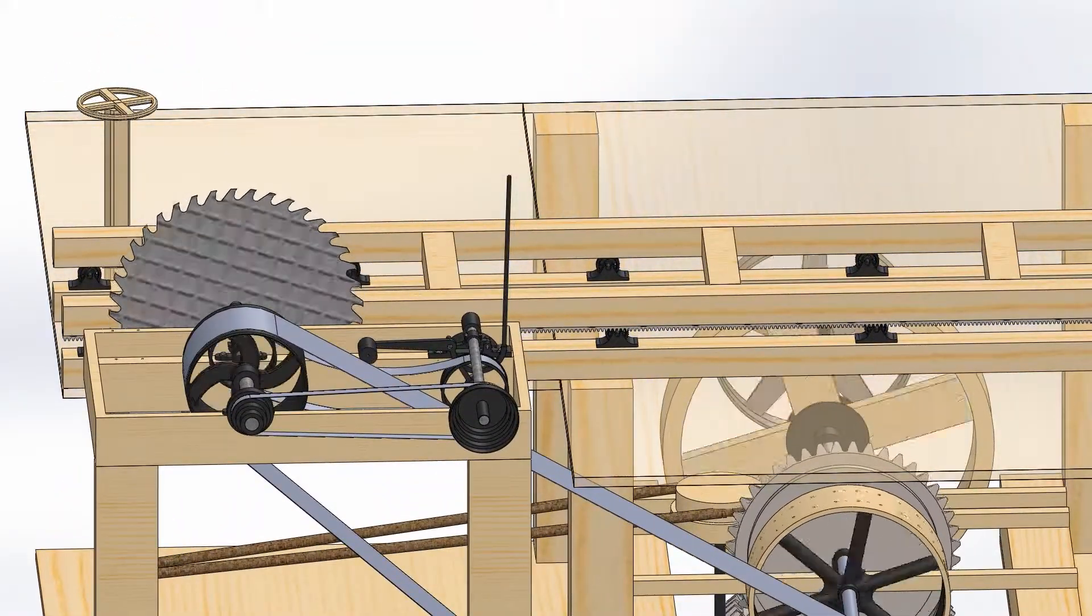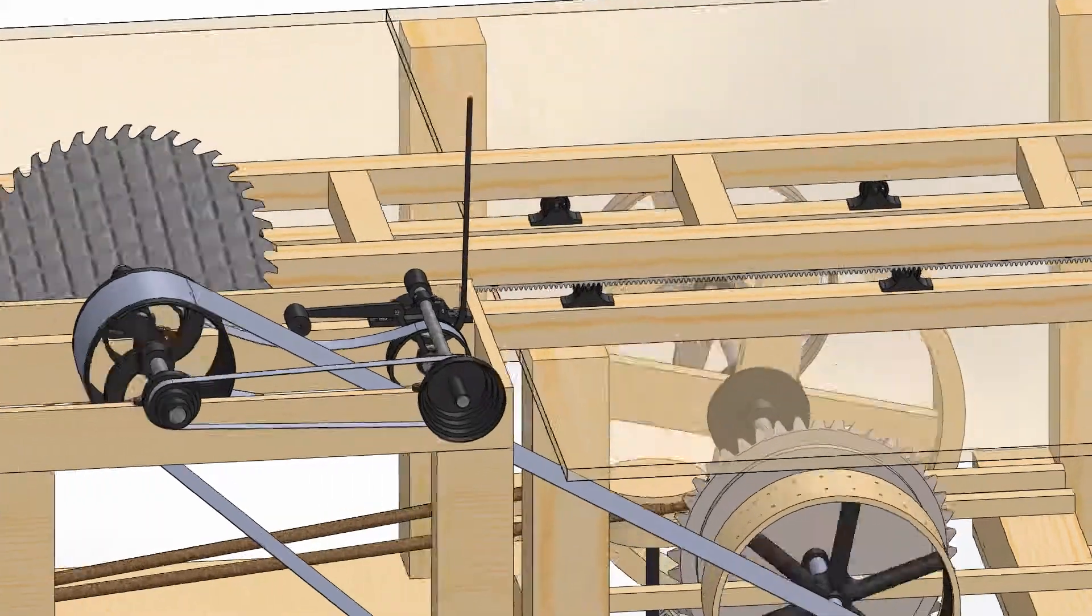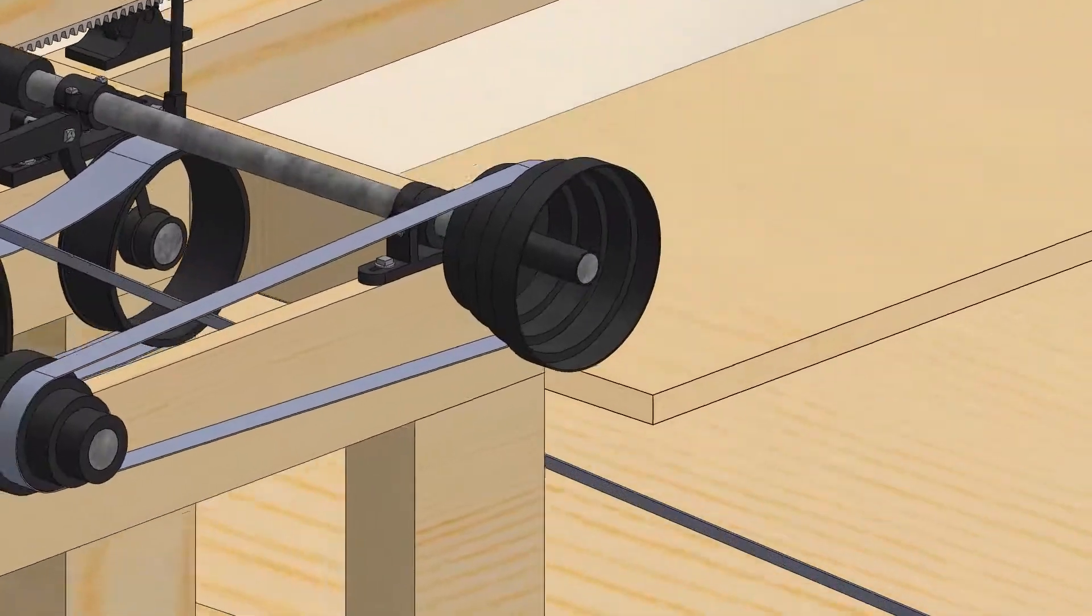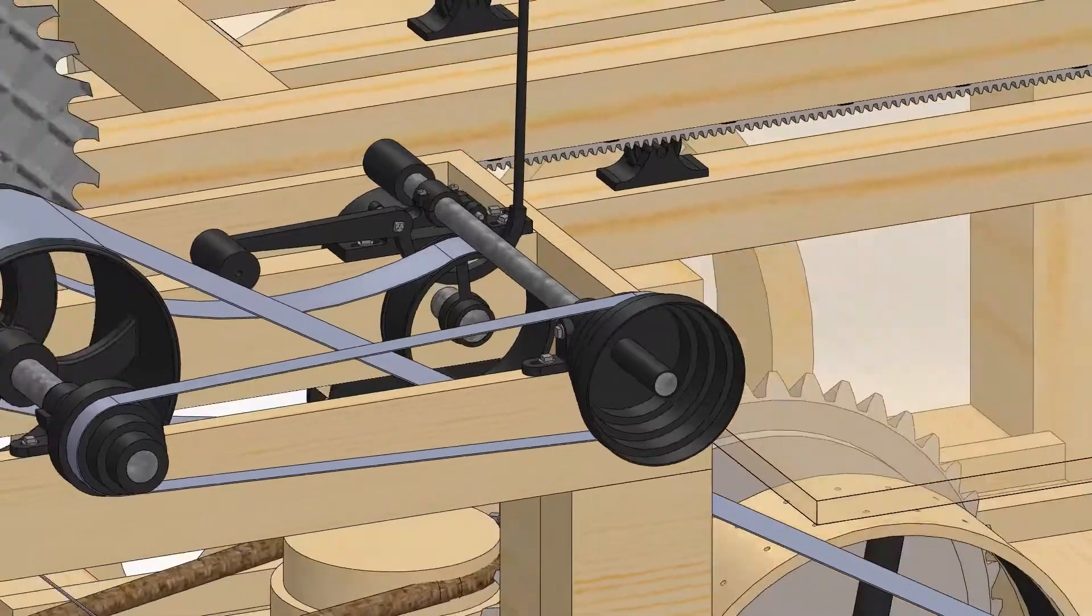The log is located on the carriage held in place by setworks to commence sawing. To drive the carriage holding the log forward to be cut, the belt connects the motion of the saw shaft to another shaft with a friction wheel.